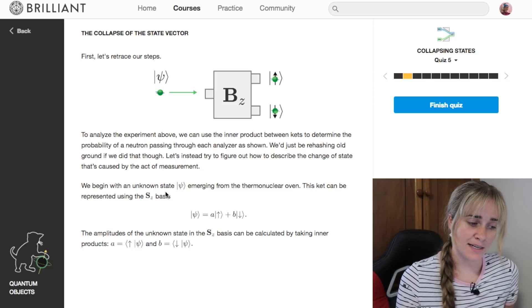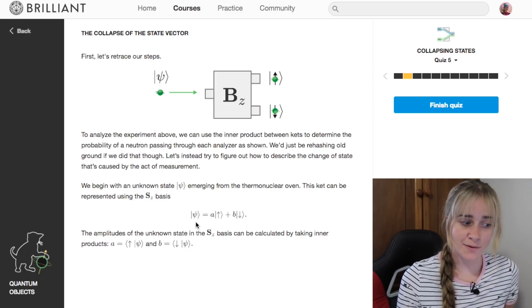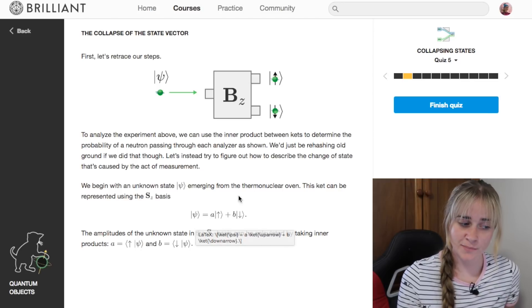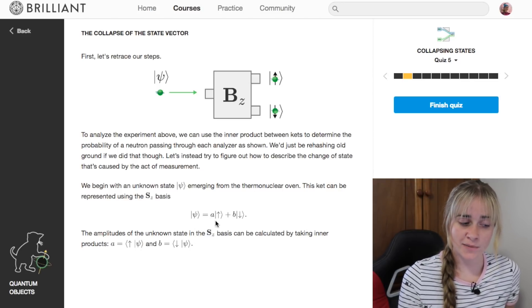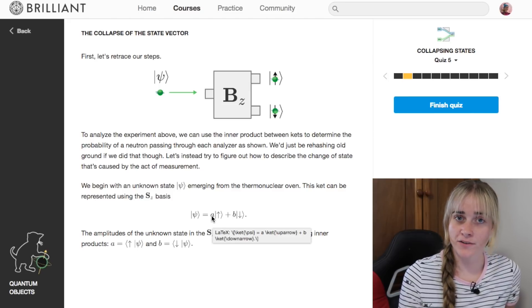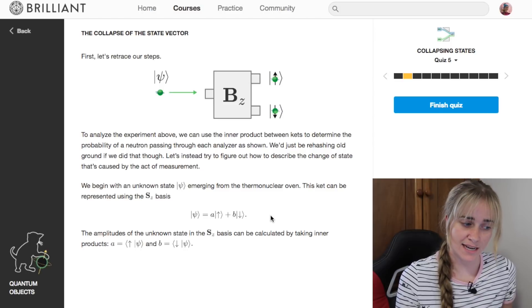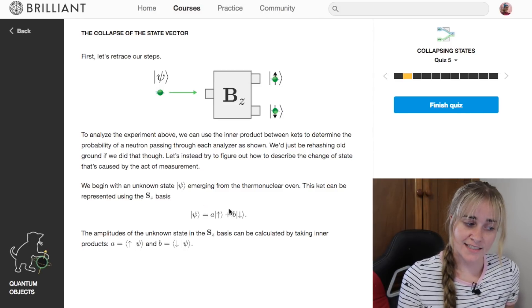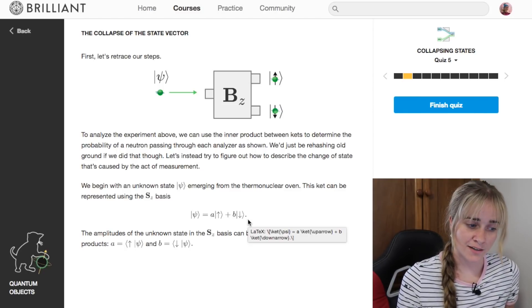As a bit of a reminder, our unknown ket psi, which is like our wave function that we input, can be written as a linear combination: some a amount of the spin up state and some b amount of the spin down state. This is called the S_z basis because z are just our basis vectors in the up-down direction.